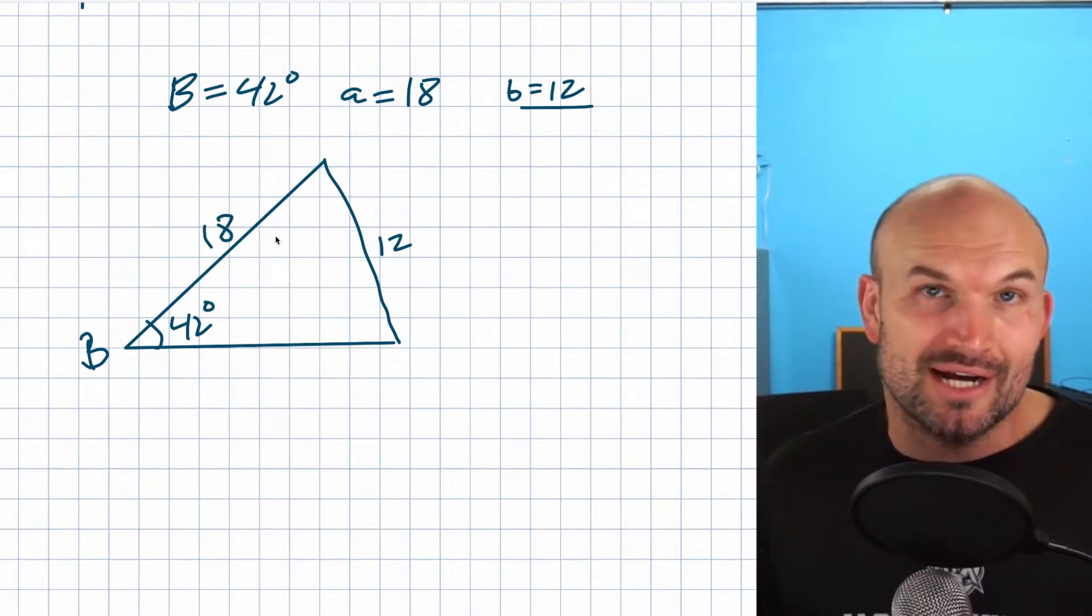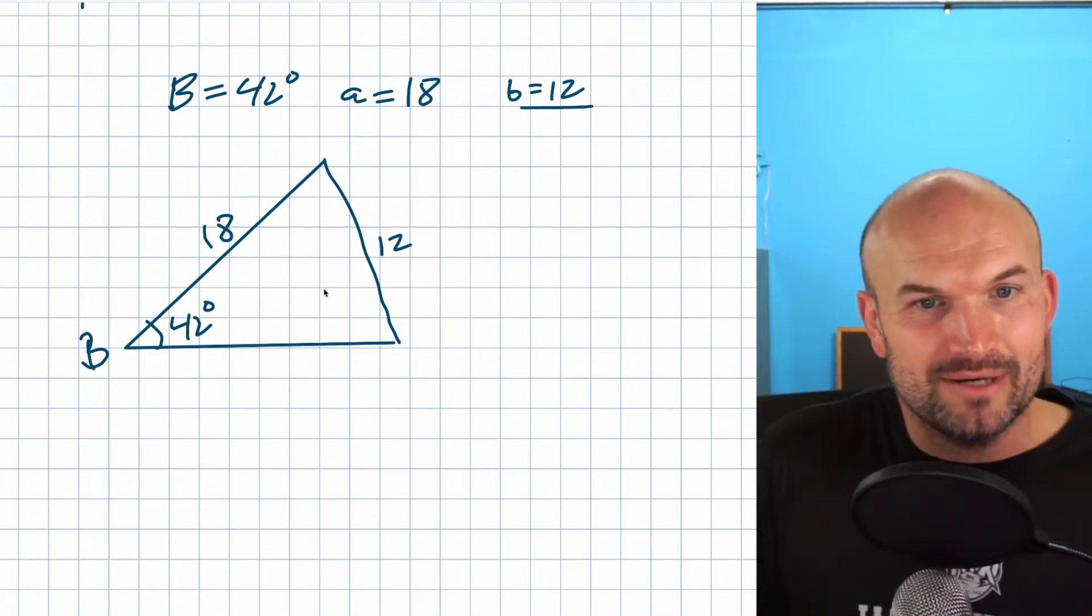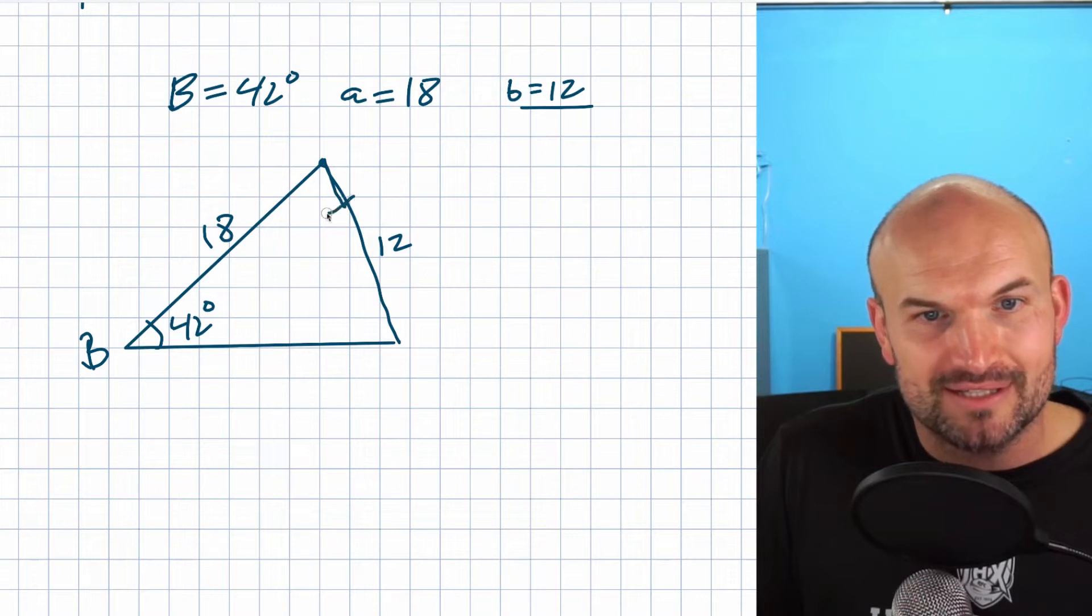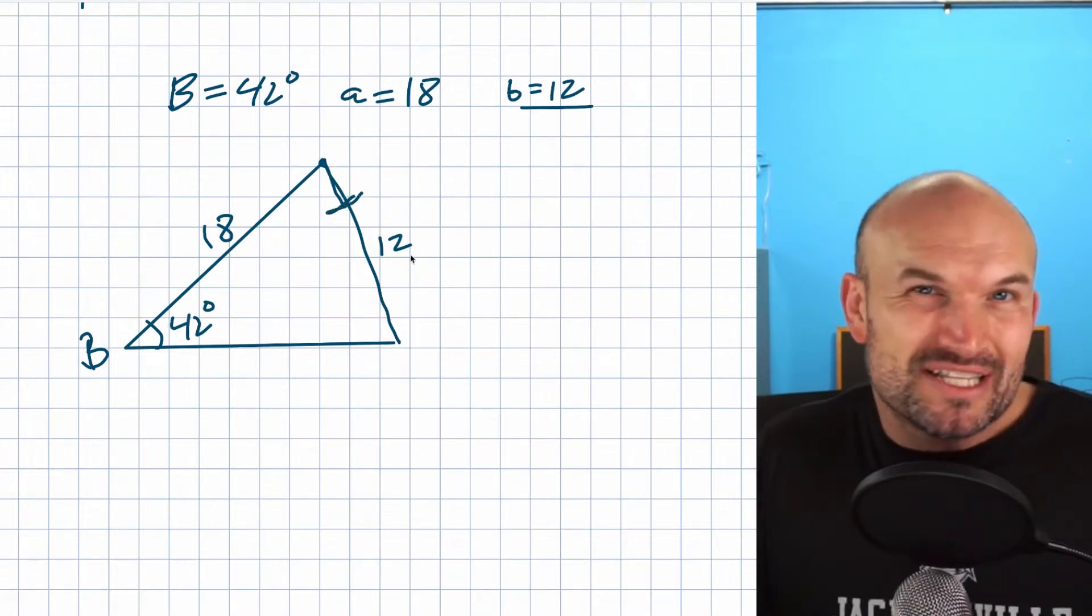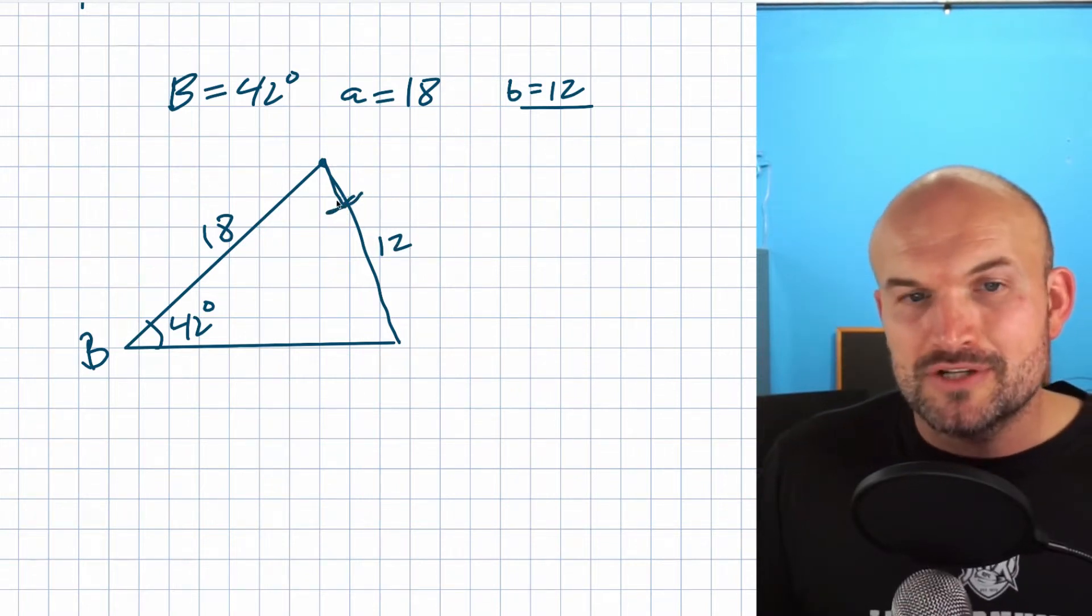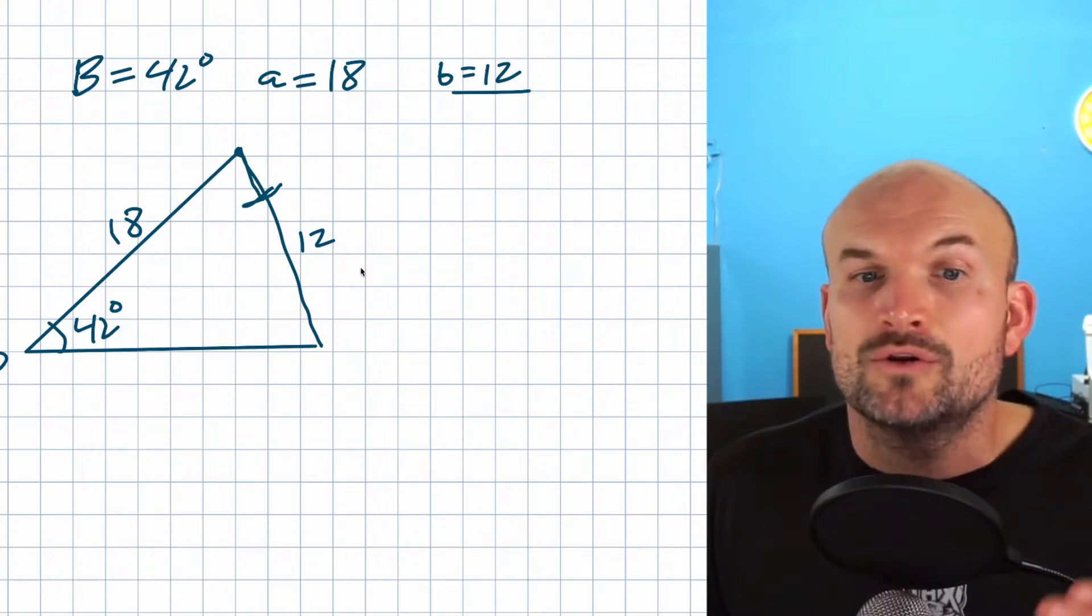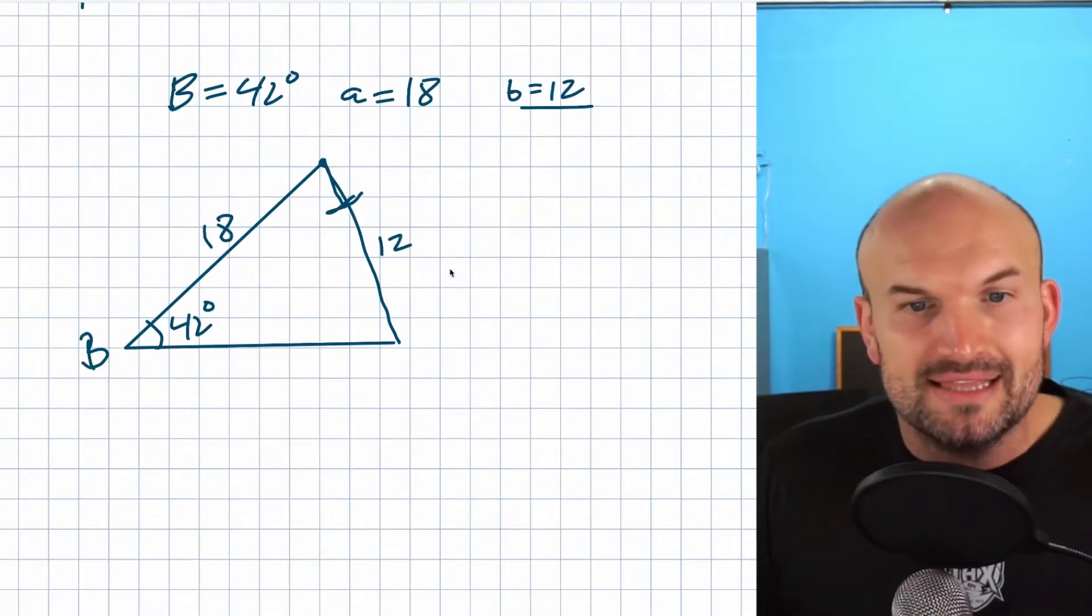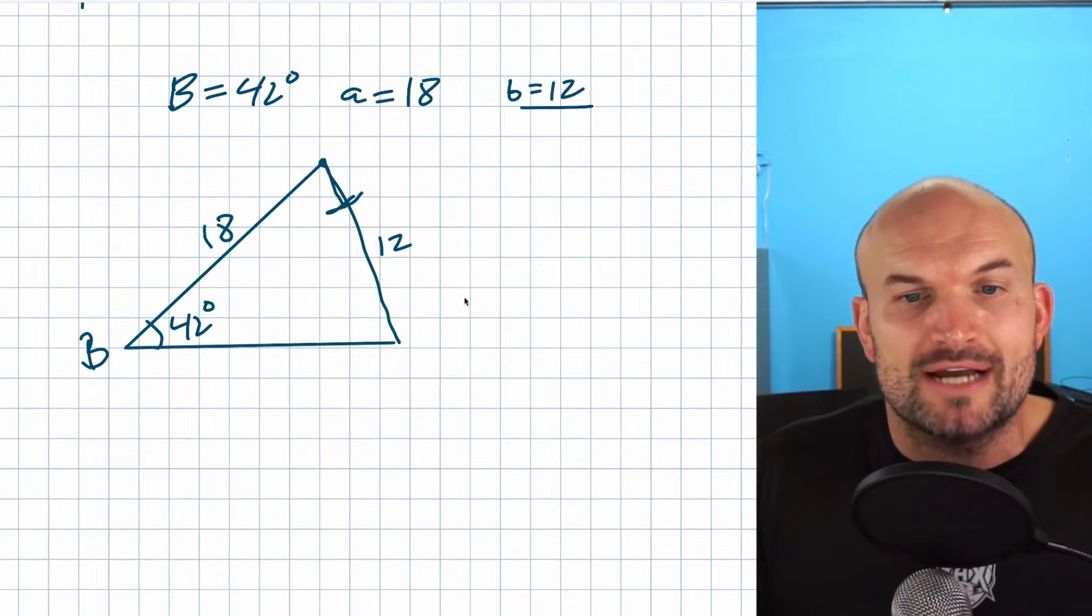The way that this is drawn kind of makes sense. When it was two, that was kind of ridiculous, like that's never going to make a triangle. But when it's 12, that's not too bad. So how are we going to figure out if this makes a triangle or not?